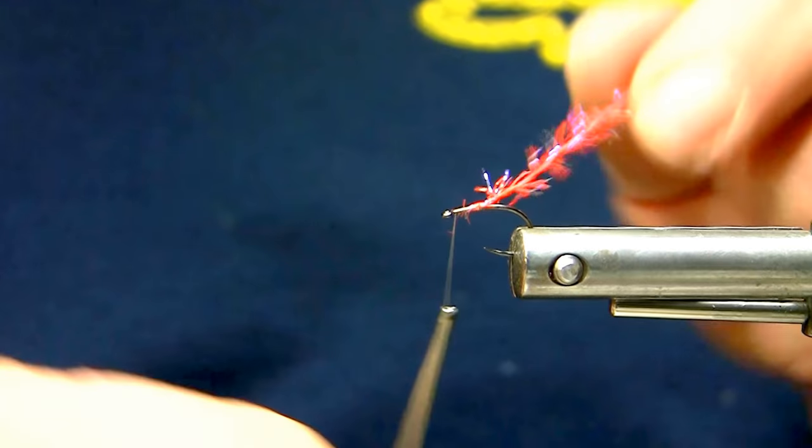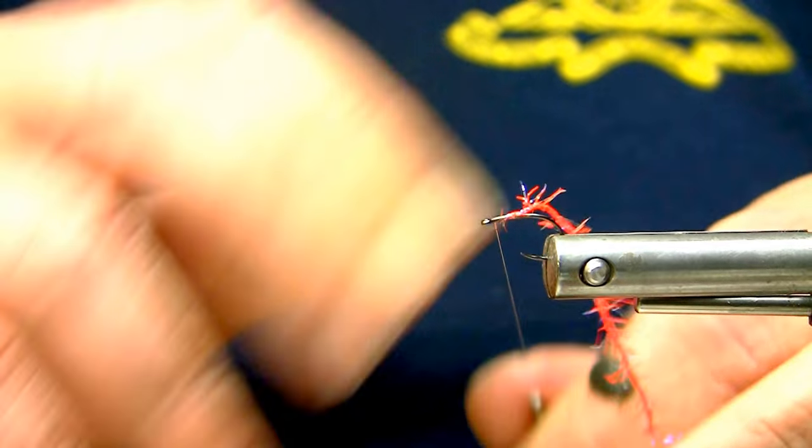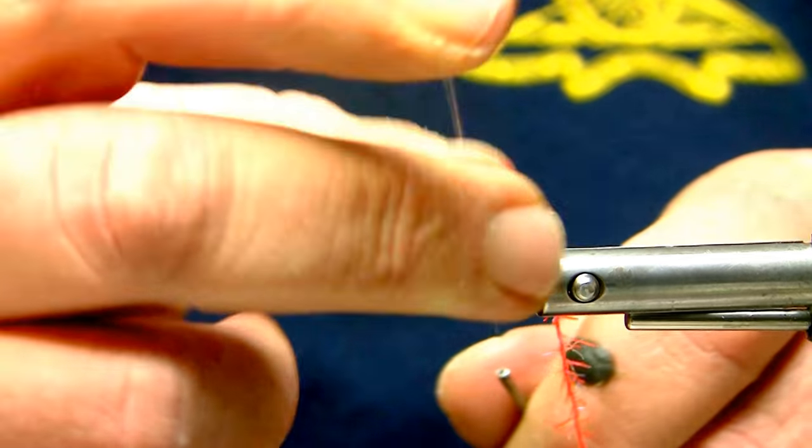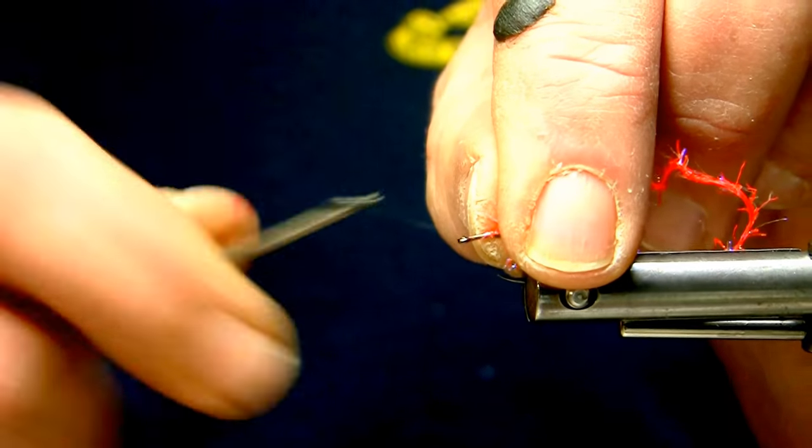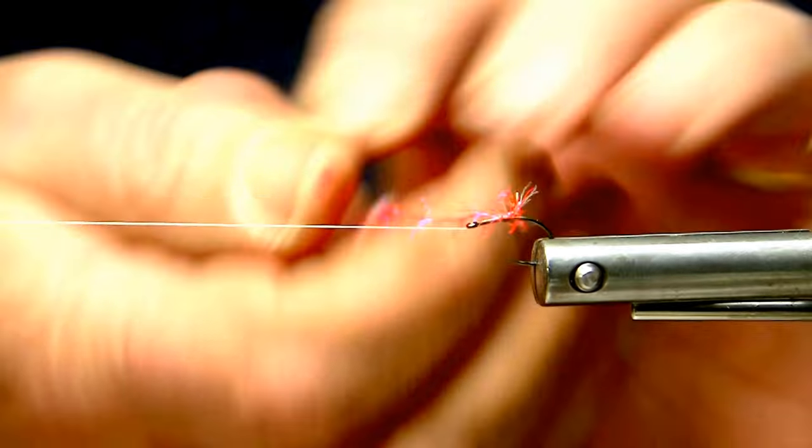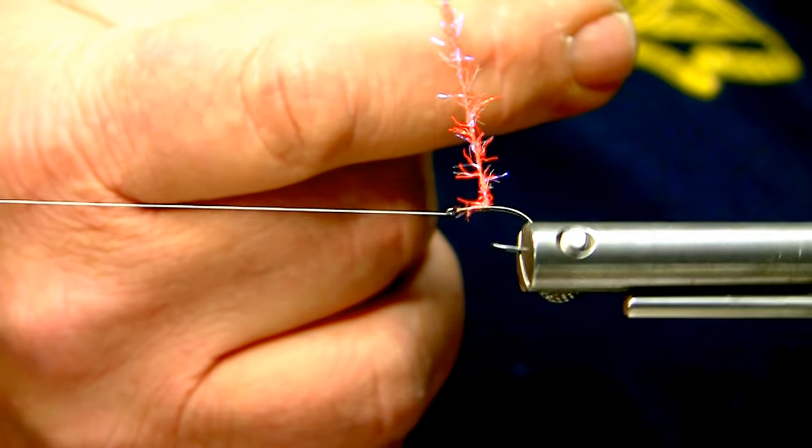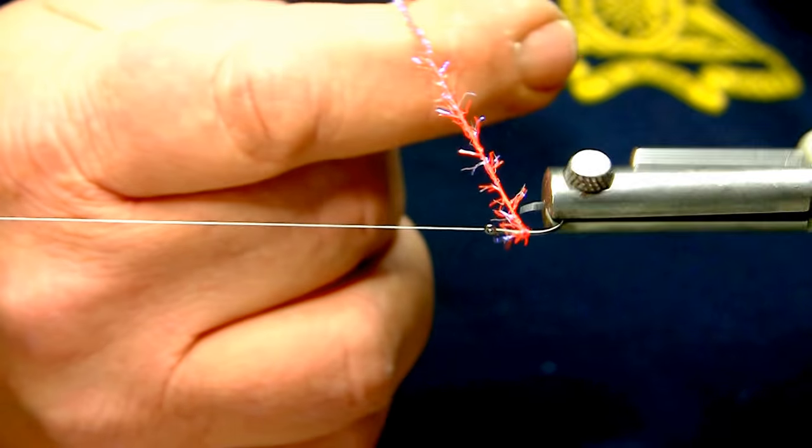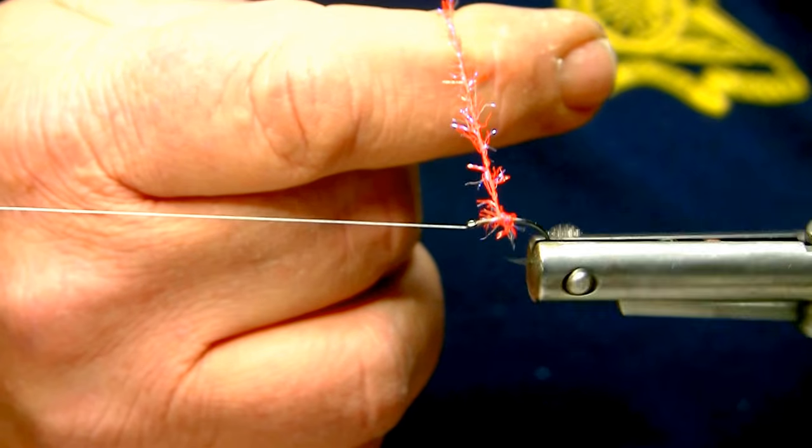And then I'll wrap it with tight turns and build a small ball in behind the hook eye before I apply my wing or attach my wing. So you can do it either rotary style or hand over hand.